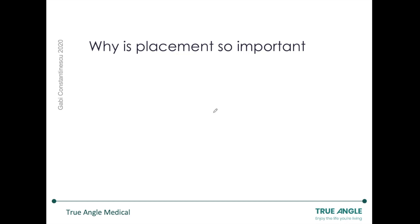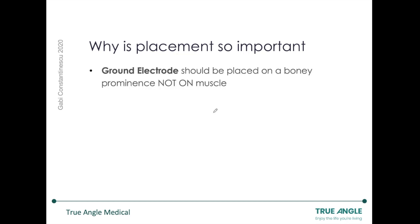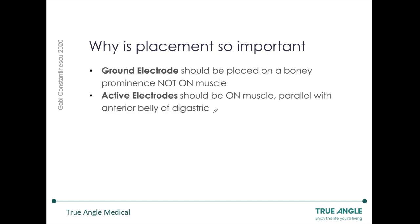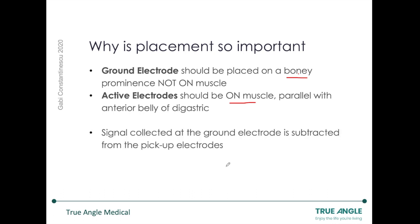So why is placement so important? There is a ground electrode and two active electrodes. The ground electrode should be placed on a bony prominence and not on muscle, and the active electrodes should be on muscle, parallel with — in this case — the anterior belly of the digastric. The signal collected by the ground electrode is subtracted from that of the active electrodes. So if you're sitting next to a microwave versus sitting in a quiet garden, that ground electrode will ensure that what the active electrodes are capturing is more or less what the muscles of interest are doing.